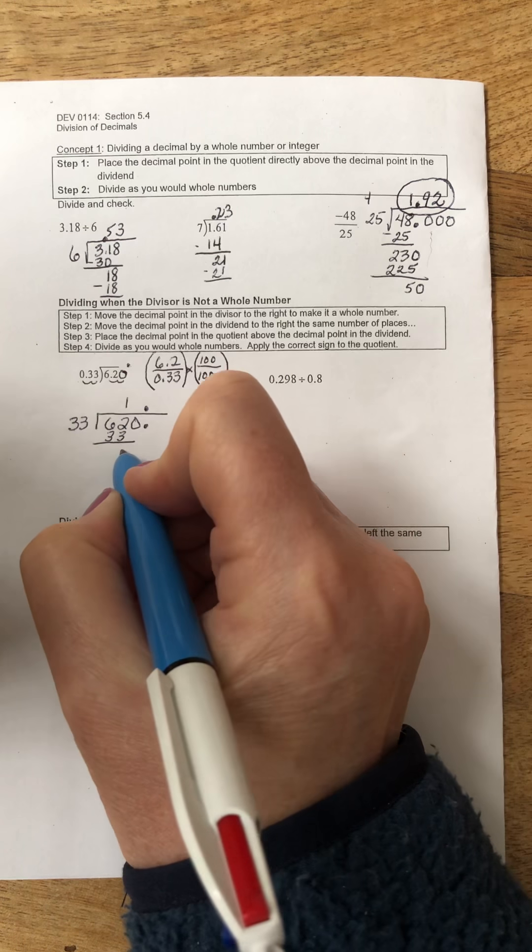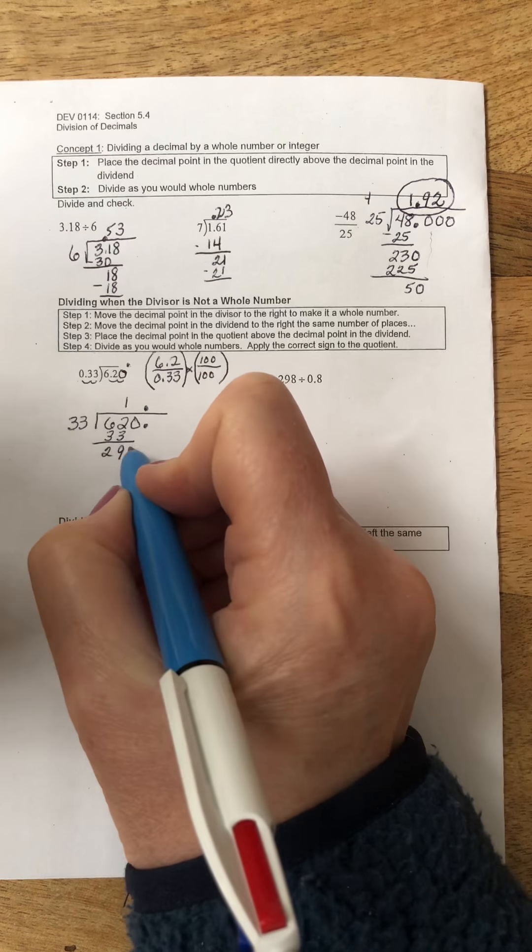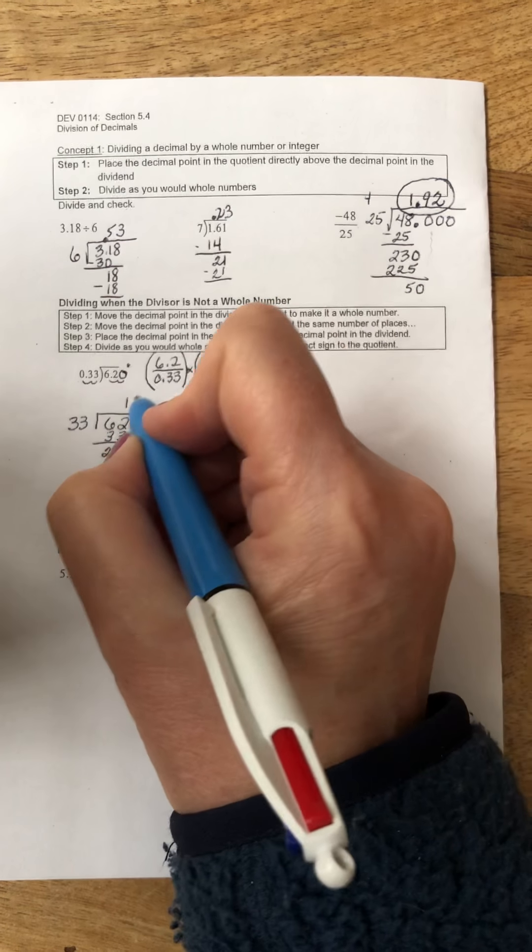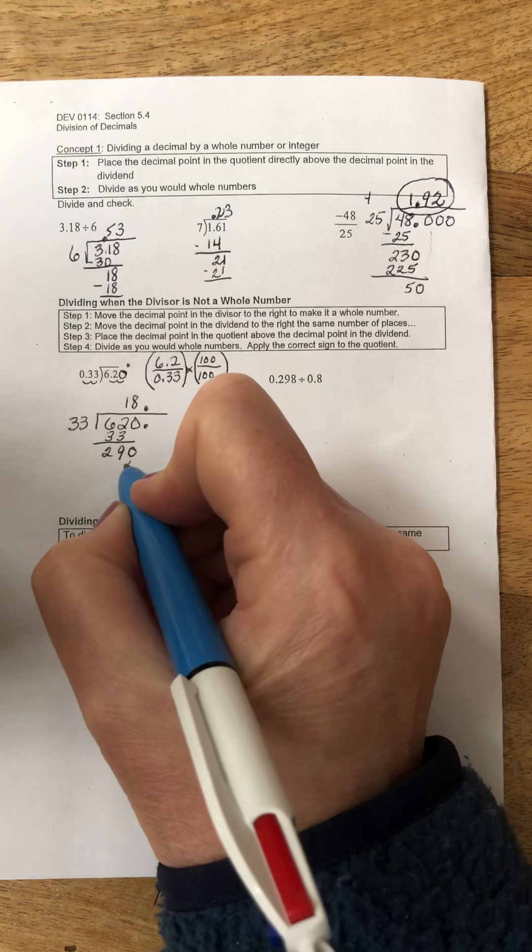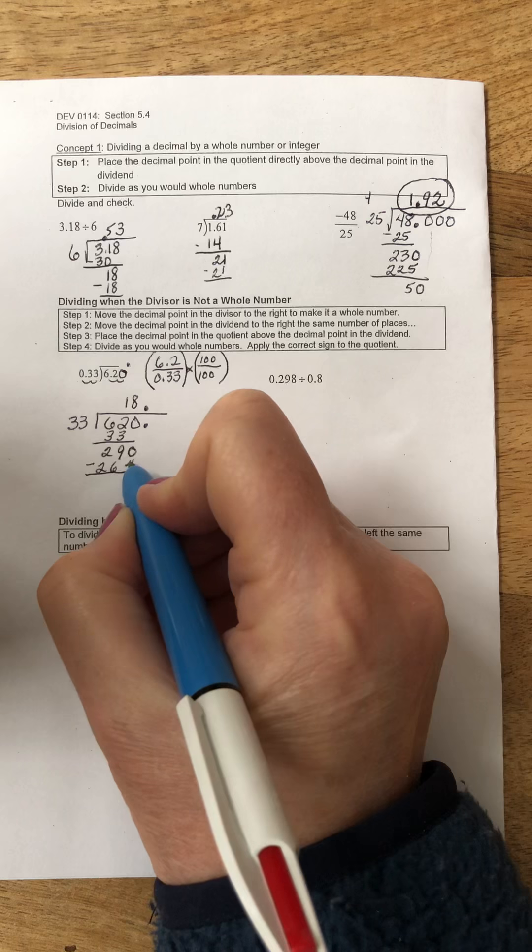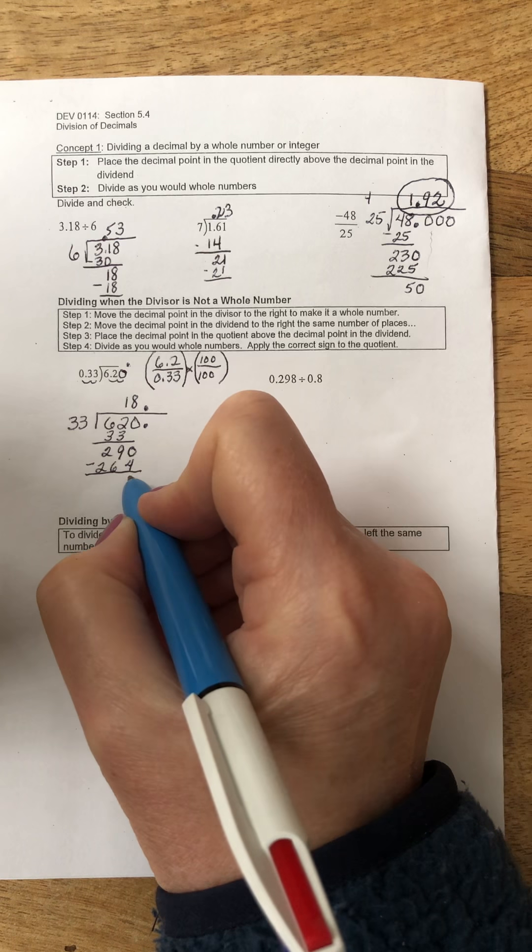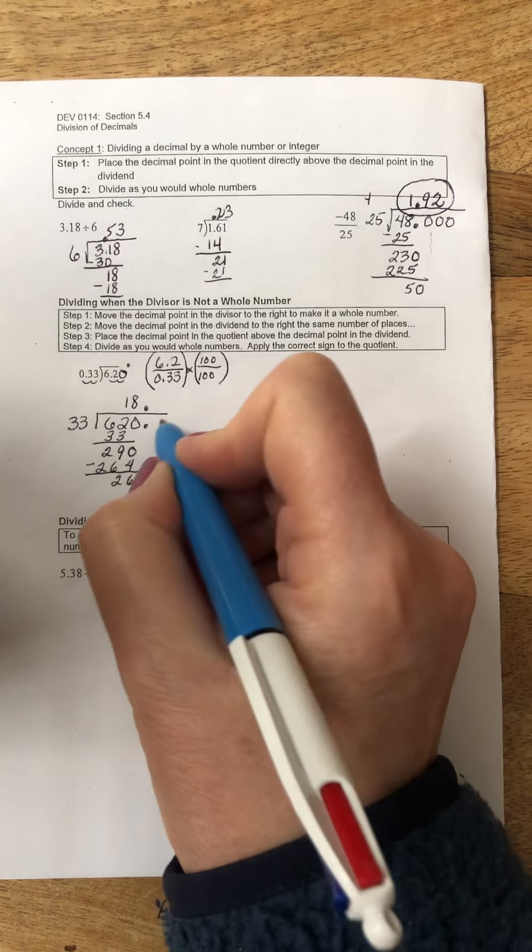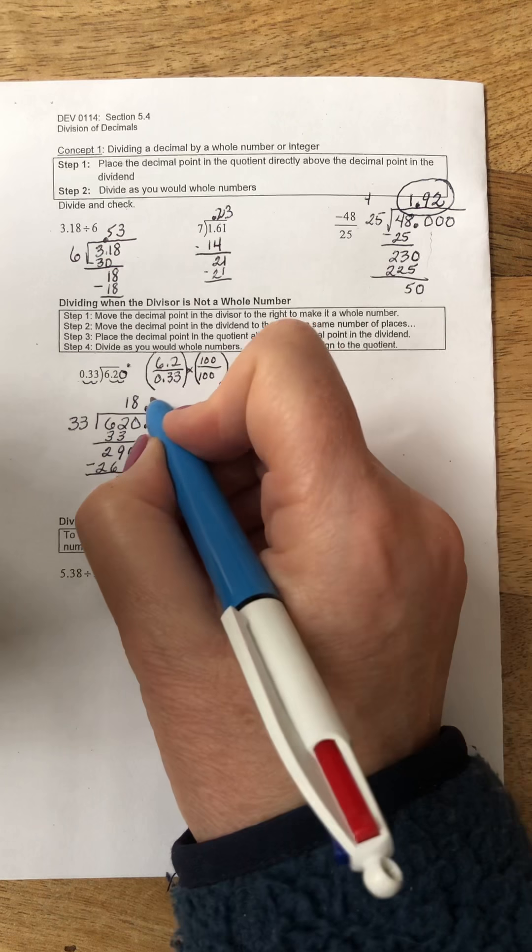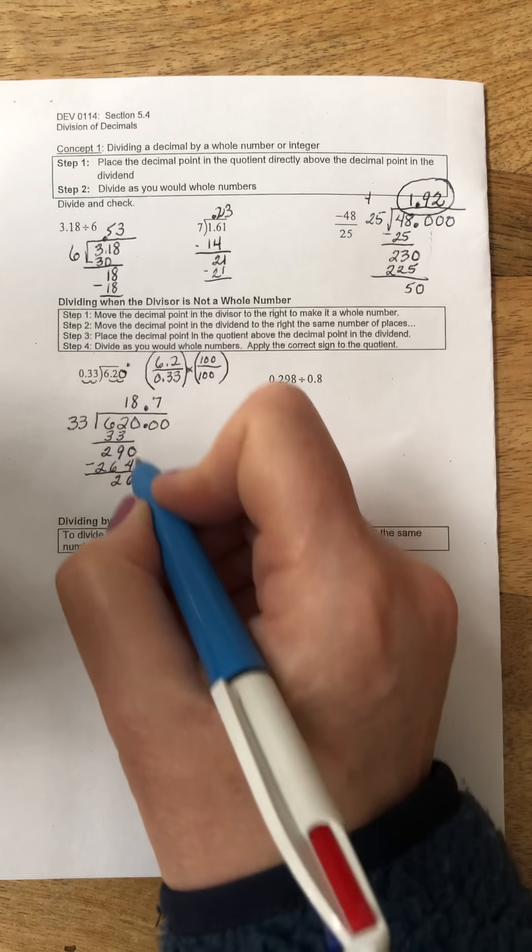Here I'll subtract, I get 29. Now I'm going to bring down the 0, and 8 times 3 is 24. I'm going to subtract 10 minus 4 is 6, and now again I'm going to add some 0s and bring them down. This goes in 7 times.